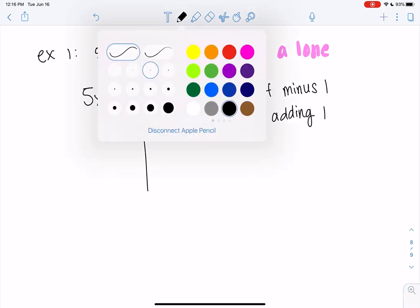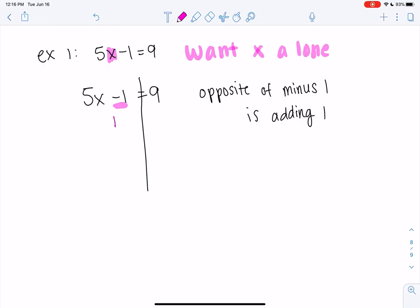So we're going to go ahead and add 1. But if we watch the first video, we always have to do the same thing to both sides. We're like keeping the scale balanced. So I'm going to add 1 to the other side as well. So minus 1 and plus 1 equals 0, so that goes away. And we get 5x equals 10.